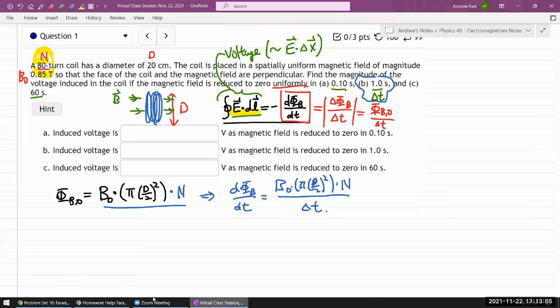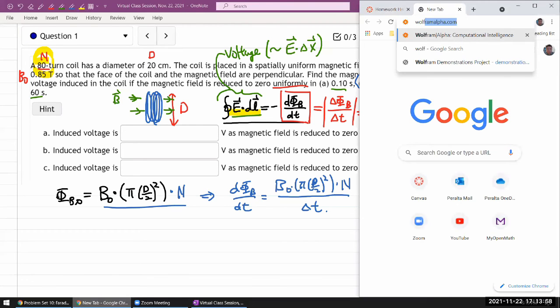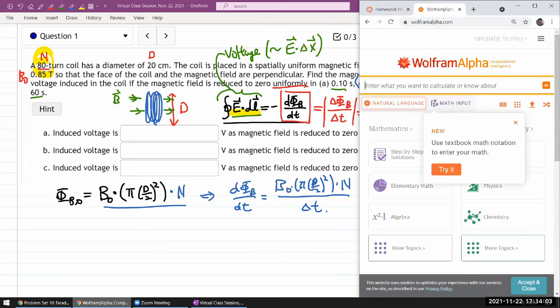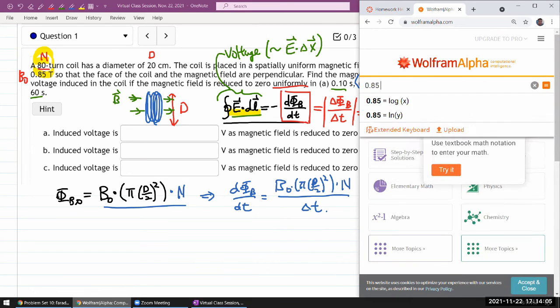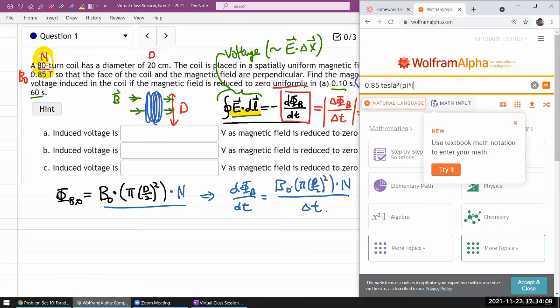So, let me plug in these numbers in Wolfram Alpha, so that I don't have to do any unit conversion, I can just let it do its thing. So, my initial magnetic field was 0.85 tesla times pi times the diameter 20 centimeter, let me do the parenthesis, 20 centimeter divided by 2 squared, that's the area, times n, 80 turn, divided by one second. I think that's the right number of seconds. Yeah. Okay. Let's see what it does.